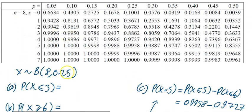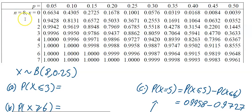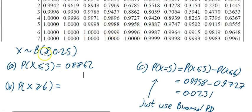So x is distributed binomial(8, 0.25). For part a, we want P(X ≤ 3). In the tables, find the section for n equals 8, go across to 0.25, then down to 3, and you get 0.8862.